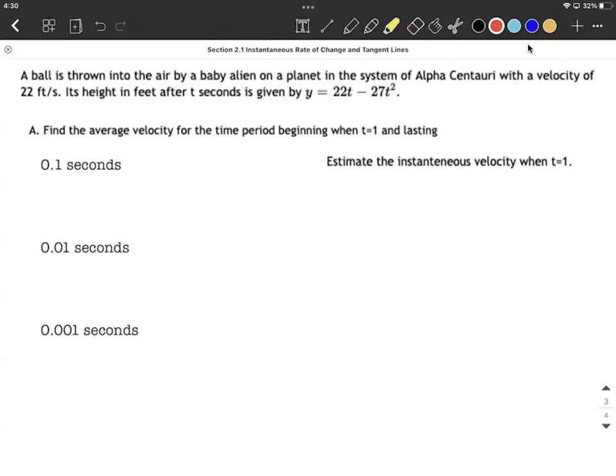Our input values are going to be how many seconds t have gone by since we tossed it into the air. So our goal on this is to find the average velocity for this time period beginning at t equals 1, and then first lasting only 1 tenth of a second, then 1 hundredth of a second, then 1 thousandth of a second.